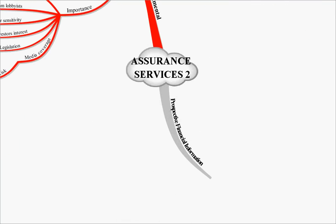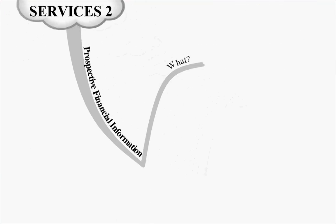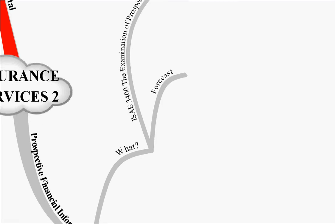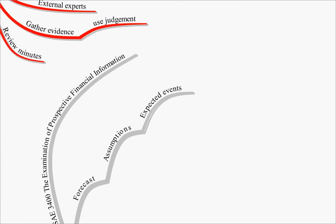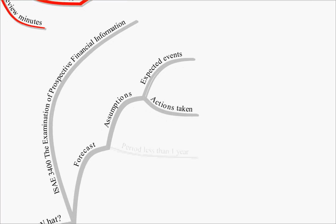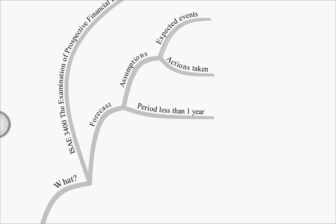On then to prospective financial information. This is covered by ISAE 3400, the examination of prospective financial information. So what are we actually talking about? First of all, a forecast, which will be based on assumptions - say expected events and then the actions taken in response to those expected events. Forecasts will tend to be for periods less than one year, based on expected events that are very likely to happen.